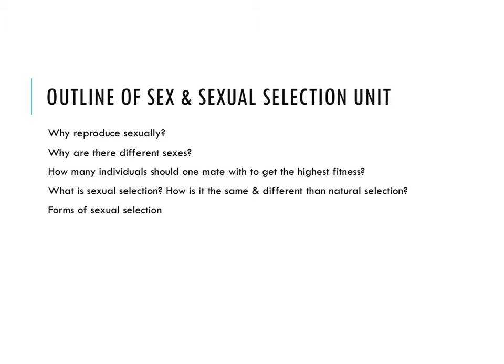Now let's focus back on the new material. In this unit, unit 7, we're going to talk about why organisms reproduce sexually, why there are different sexes in a lot of species, how many individuals one should mate with to get the highest fitness, what sexual selection is, how it's the same or different than natural selection, and then we'll go through some forms of sexual selection.